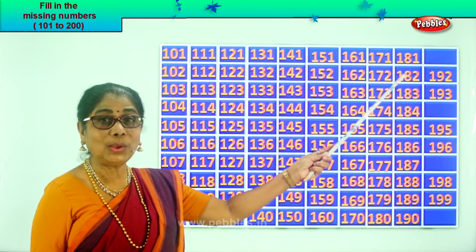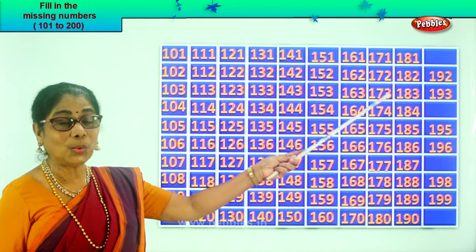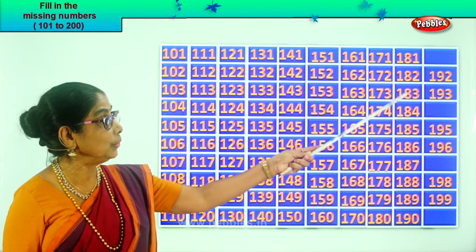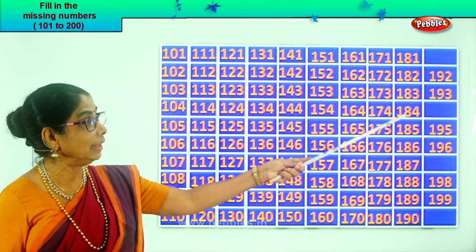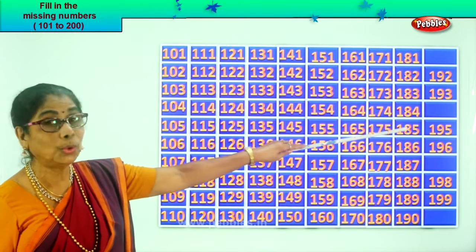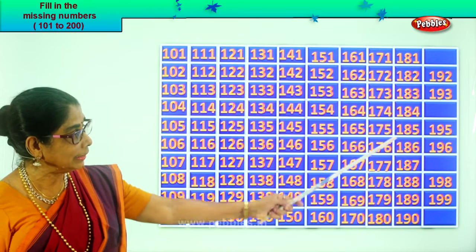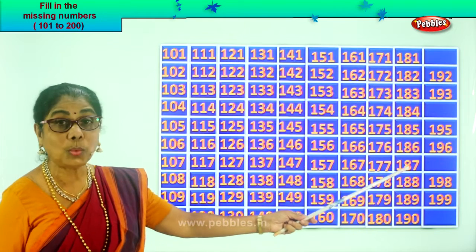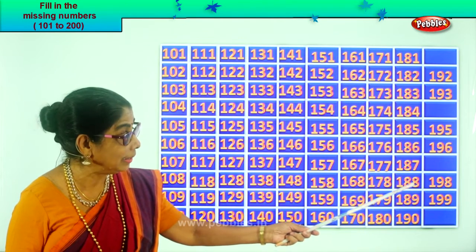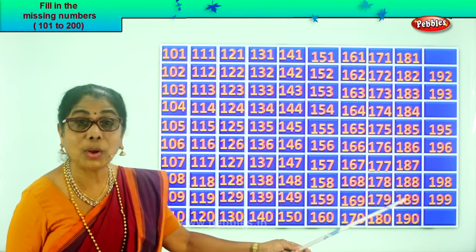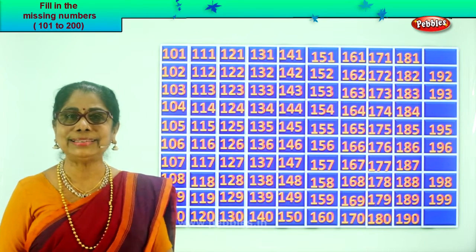Let's look at the numbers we filled in: 180, 181, 182, 183, 184, 185, 186, 187, 188, 189, 190.